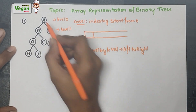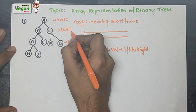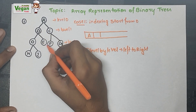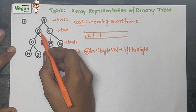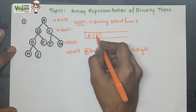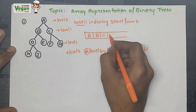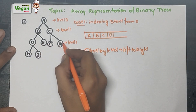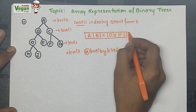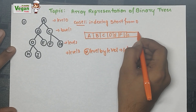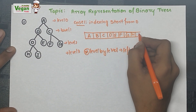At level 0, only one element is there, so we write A. At level 1, two elements are there — left to right: B, then C. At level 2, left to right: D, E, F, G. At the next level: H and I.